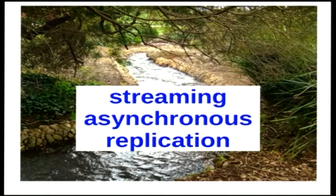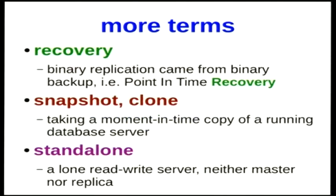Let's move into doing some hands-on streaming asynchronous replication. This is what we should start with because it's the kind of replication most people want. You want a copy of your Postgres server, as up-to-date as possible without putting load on the master, and you want to be able to fail over quickly. Binary replication in Postgres grew out of our continuous backup feature, which uses point-in-time recovery. The term 'recovery' is used both in the replication documentation and in file and directory names. A 'snapshot' or 'clone' refers to taking a point-in-time copy of a running PostgreSQL server. A 'standalone' is a server which is read-write and not participating in replication.